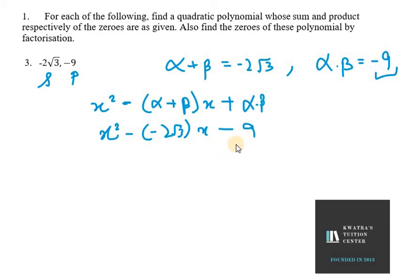We get the quadratic polynomial as x² + 2√3 x - 9. So f(x) = x² + 2√3 x - 9.